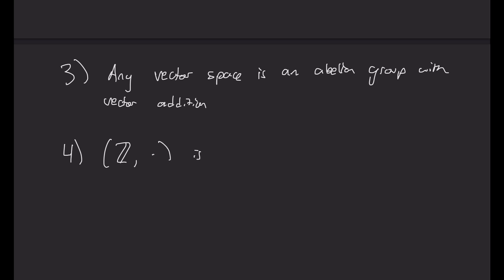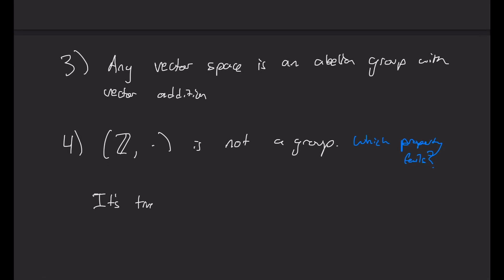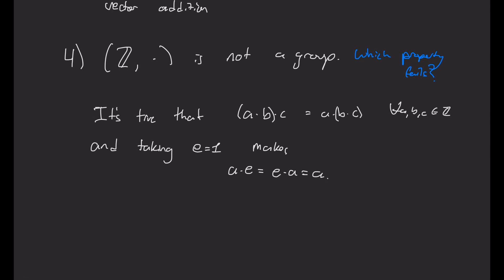So let's look at a non-example next. Z with multiplication is not a group. So can you see which property fails? So we have a set that's not empty, we have a binary operation, so one of those G's should fail for this combination. So we can go through the list. So G1, it's definitely true that the multiplication is associative. And we can take E to be 1. So notice that a times 1 is the same as 1 times a for any integer a. So it does have a unit, so it satisfies G2. So maybe G3 is the problem.